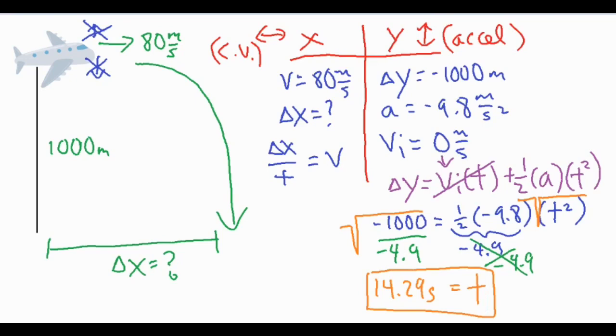So I got a time of 14.29 seconds. All I did is set the delta y equal to one half a t squared. One half times negative 9.8 is negative 4.9. So I divided both sides by negative 4.9 and took the square root of both sides, which gave me our time of 14.29 seconds,